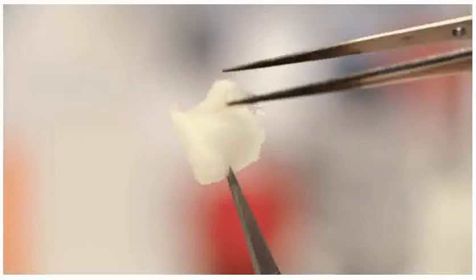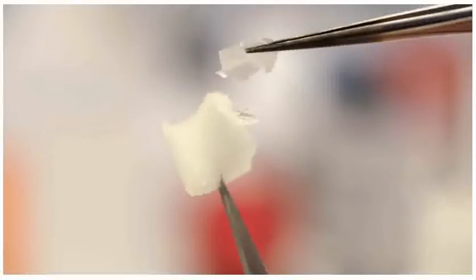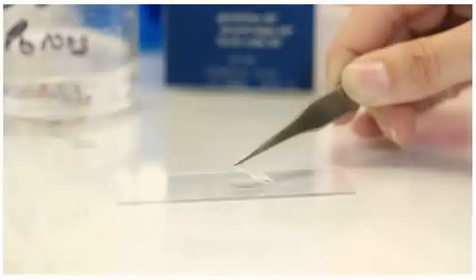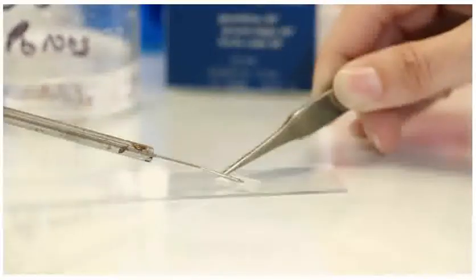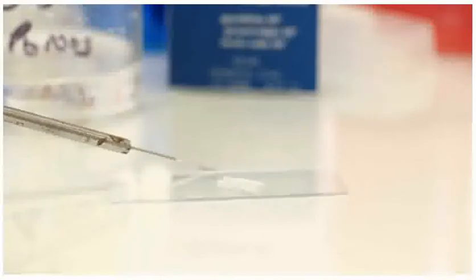A drop of water is placed onto a microscope slide. Forceps are used to gently separate the epidermis from the onion. The epidermis is carefully placed onto the slide over the drop of water. A mounted needle is used to help flatten out the epidermis and push it onto the drop of water.